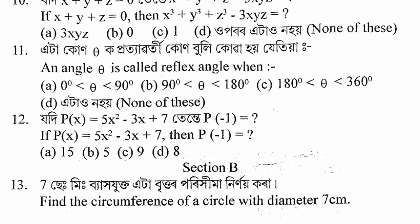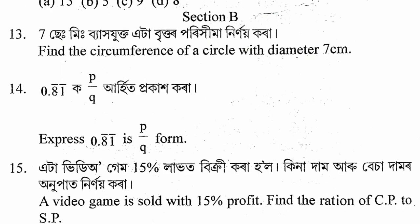The question was: if p(x) equals 5x squared minus 3x plus 7, then p(-1) equals what. The answer is 15. The reason is that when we put x equals minus 1 into the expression, we get 5 plus 3 plus 7 which gives 15. So the answer is option a.